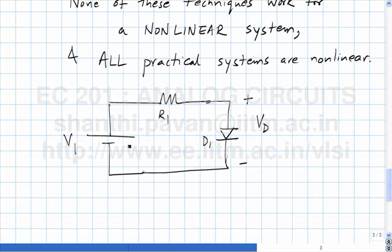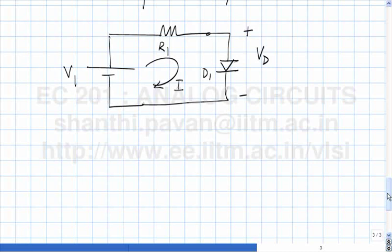We are actually interested in finding the voltage VD across the diode. We denote the loop current by I and how would we find VD? We just write Kirchhoff's voltage law and Kirchhoff's voltage law is telling us that V1 which is the battery voltage must be simply equal to the voltage across the resistor VR1 plus VD. Clearly, when you have a resistor R1 and a current I flowing, the voltage across the resistor is simply I times R1.